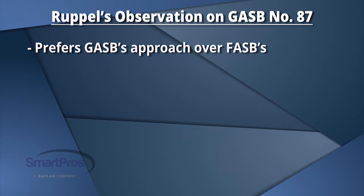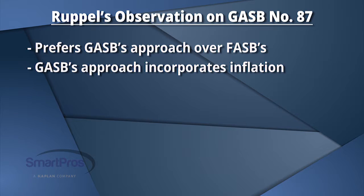In current standards, I always felt the GASB approach to lease accounting made more sense than the FASB approach to straight-lining. FASB would take all scheduled rent increases over the lease, even if it was just for inflation, and straight-line those. Where the GASB standards said if it's just normal inflation, don't straight-line that — only straight-line if there's a free rent period or some other significant benefit given to the lessee.